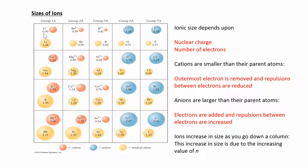So cations get smaller and anions get bigger. But if you look from cation to cation in the same column, they have the same trend as the parent atom — it increases as you go down, because you're gaining another row of electrons. The same trend holds for anions as well. Whether it's the parent atom or the ion, it's going to get bigger as you go down that column.